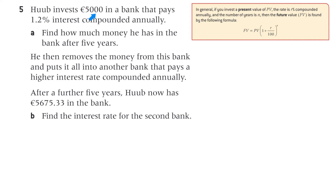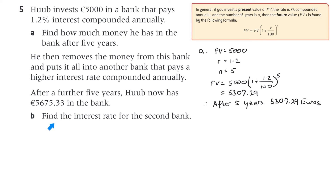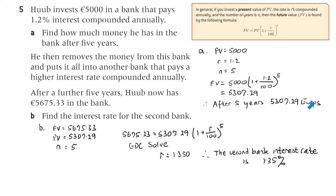Question five. Hub invests €5,000 in a bank that pays 1.2% interest compounded annually. Part A: find how much money he has in the bank after five years. The present value is 5,000, the interest rate is 1.2%, and the number of years is five. Putting it in the formula we get €5,307.29. It's good to write your answer as a sentence.